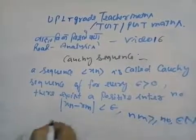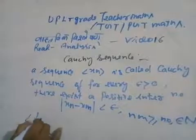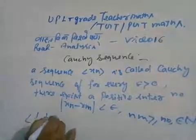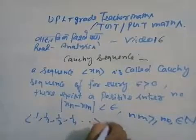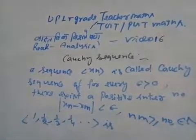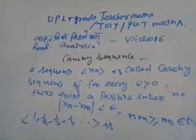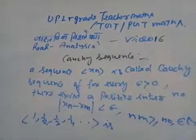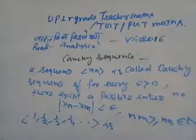As an example, the sequence xn = 1/2, 1/3, 1/4, ... is a Cauchy sequence, because the modulus of |xn - xm| is less than epsilon, and epsilon must be greater than zero.